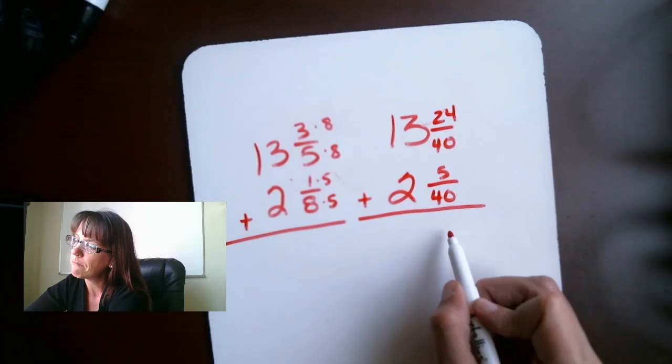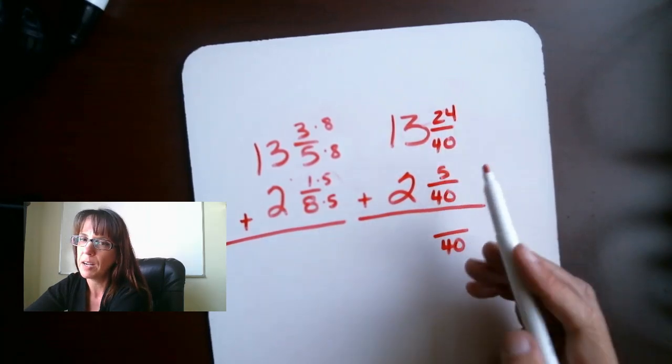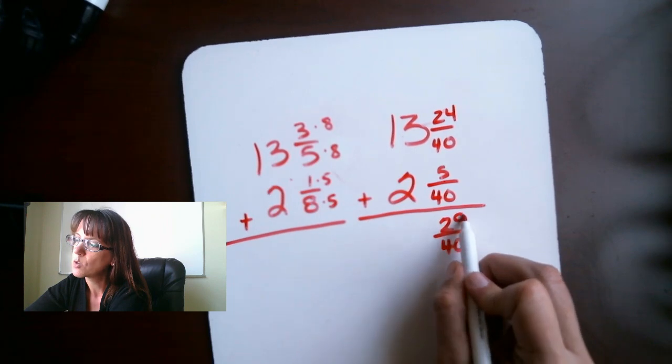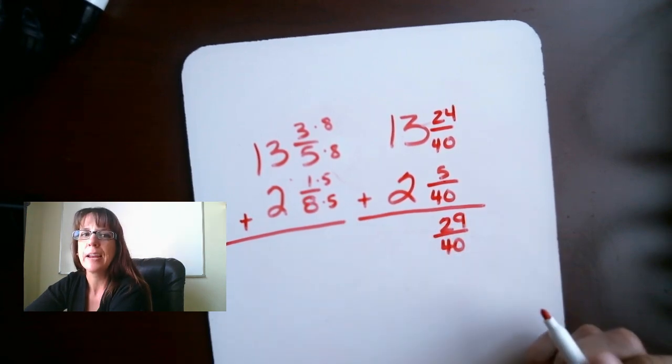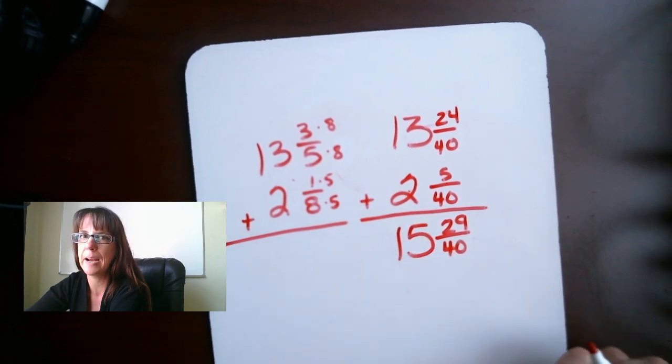So, looking at this guy, let's deal with just that fraction portion first. 24 plus 5 gives me 29. Good. Now, the 13 plus 2? 15. Bam! A lot faster, right? A lot faster.